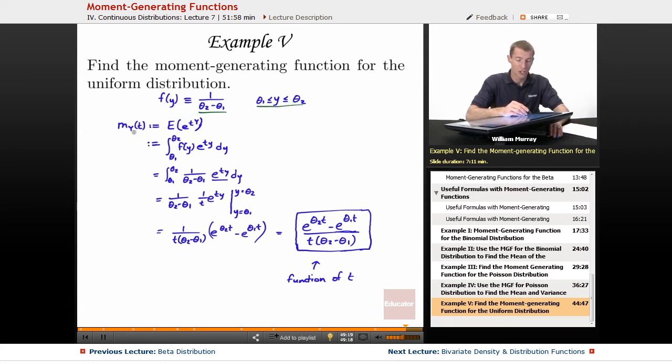The moment generating function, by definition, we learned that in this lecture, is the expected value of e to the ty. The expected value of any function is the integral of the density function times that function. If this were discrete, we'd have a sigma sign, a summation, instead of an integral, and we'd have a probability function p instead of a density function f. But it's really the same idea. So, when you look at these formulas, if you kind of blur your eyes a little bit, you should see how they're really the same idea.